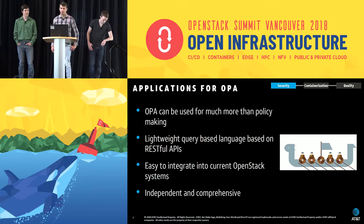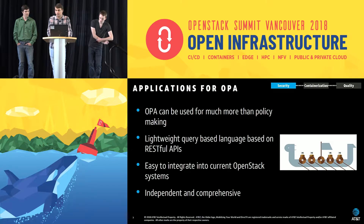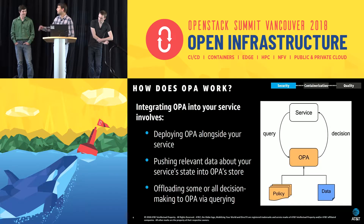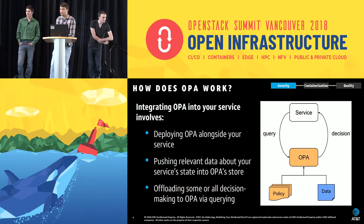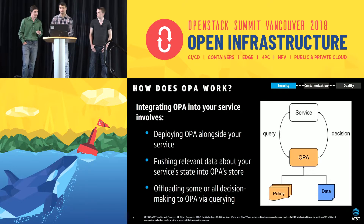It is actually built on RESTful APIs, so this means it can do a lot more than just policy, but it is the all-in-one solution as well, so you're not building all the little things. It's easy to integrate into a current OpenStack system, and it is independent. As you can see, you have your service that sends a query to OPA. You will have given it the policy and any data it needs. It will take in the query, and from its data and the policy, it will send back a decision to your service, all run independently from that service itself. So you're not integrating anything crazy.